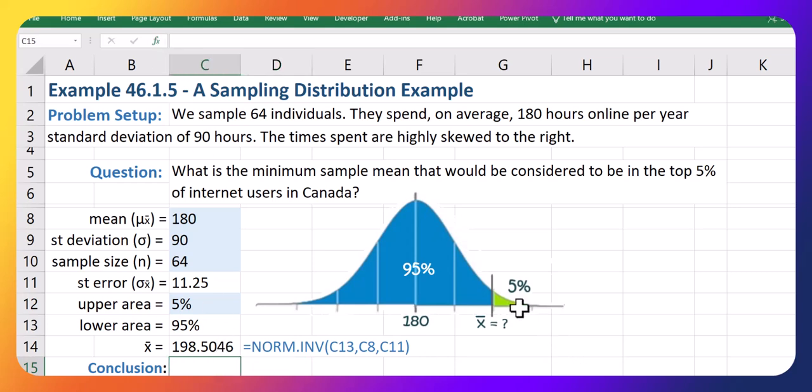Or if you will, the minimum hours to be in the top 5% is 198.5 hours.